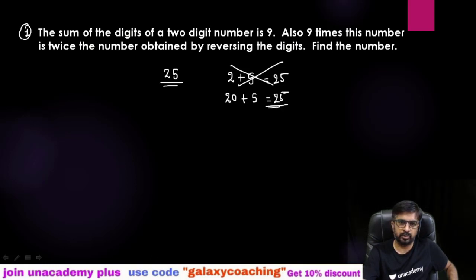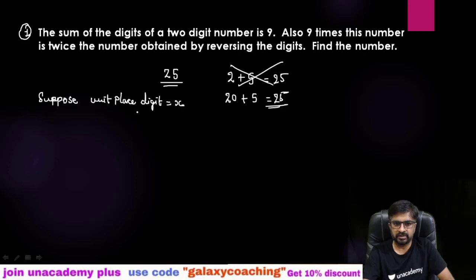So actually whatever term is there on tens place, we have to multiply 10 with them. So suppose unit place digit is equal to x and tens place digit is equal to y. So now this is your tens place digit. So what will be your expanded form? Here you will get tens place, you need to multiply 10 with the tens place number and then x. So your number in terms of x and y will be 10y + x. This is your two digit number in terms of x and y.